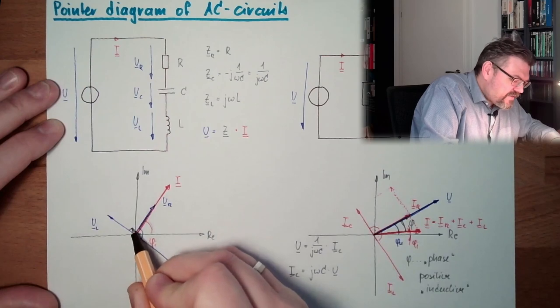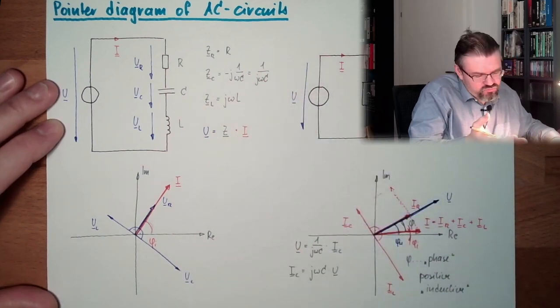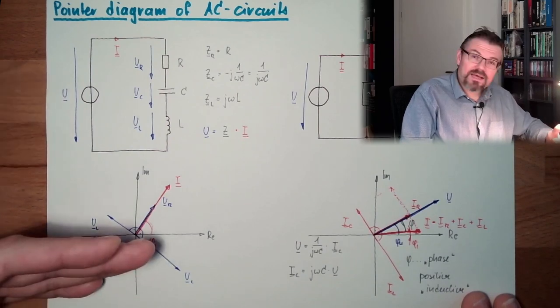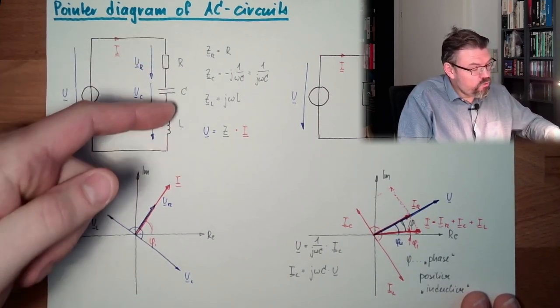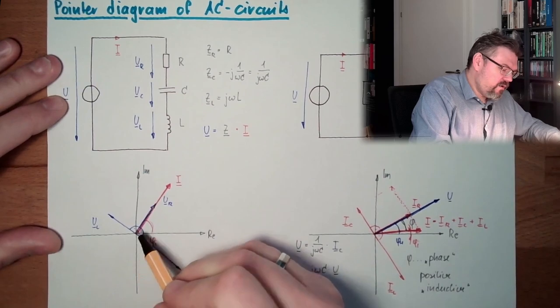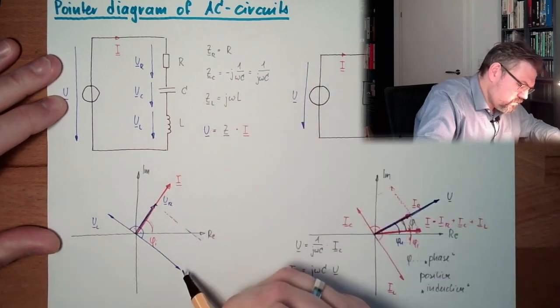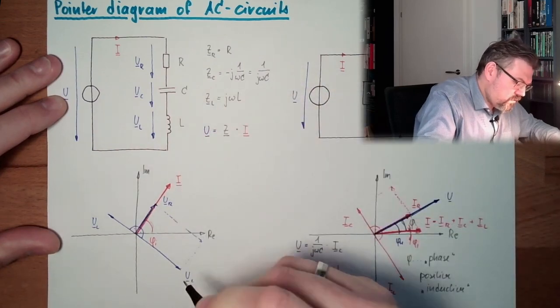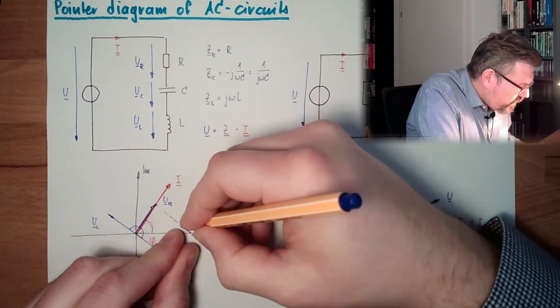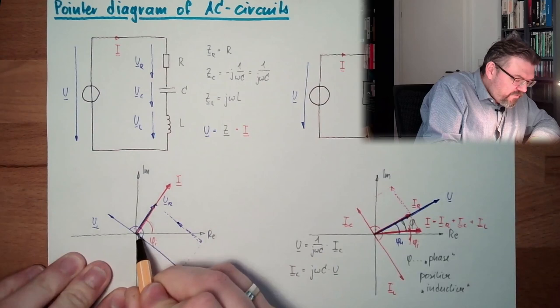The lengths, like said, they are depending on how big is C, how big is L, and so on. The result will be a value. That's that. And now, loop rule, U equals UL plus UC plus UR. Now let's do this. UR plus UC plus UL. It's always vector adding. We are at this point. And here we have now our U.